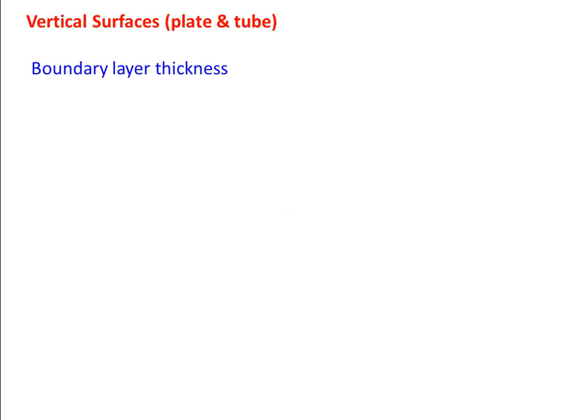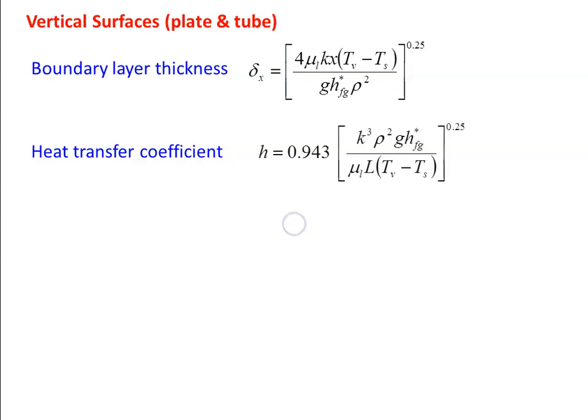We are going to use only the correlations available in the heat and mass transfer data book. For a vertical surface — plate or tube — the boundary layer thickness is: δx = [4 μl k x (Tv − Ts) / (g · hfg* · ρ²)]^0.25. The heat transfer coefficient is: h = 0.943 [k³ ρ² g hfg* / (μl · L · (Tv − Ts))]^0.25.